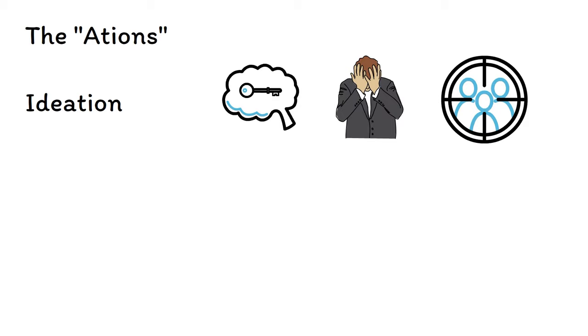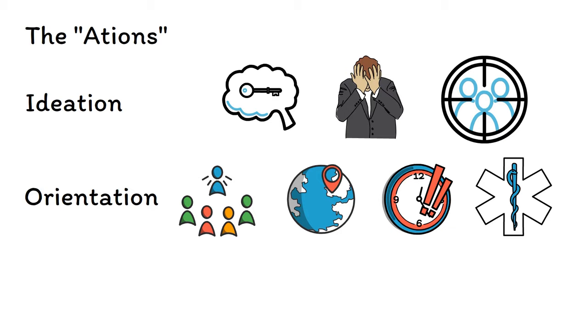The next ation is orientation. A patient's current level of orientation can be assessed by asking about person, place, time, and situation. This is particularly important for any patients who appear confused or have had recent changes in cognition.